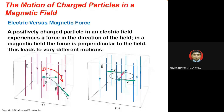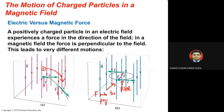For a positive charge moving in a magnetic field from top to bottom, using the right-hand rule with v cross B, we get two different directions of force: at one position F is into the page, and at another position F is out of the page.